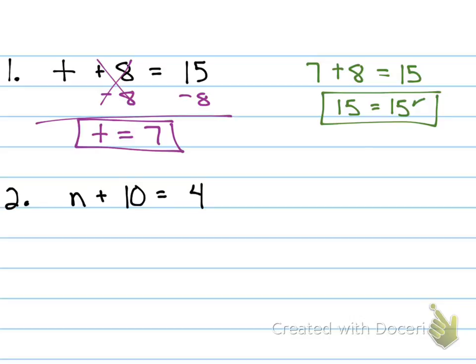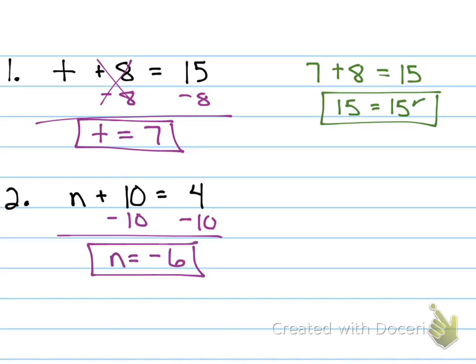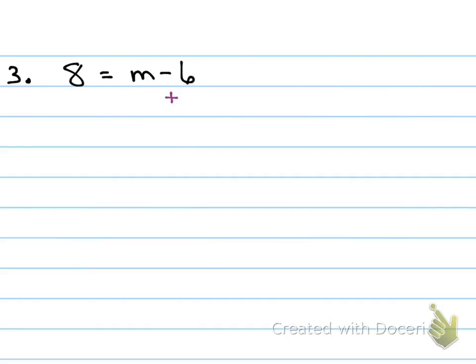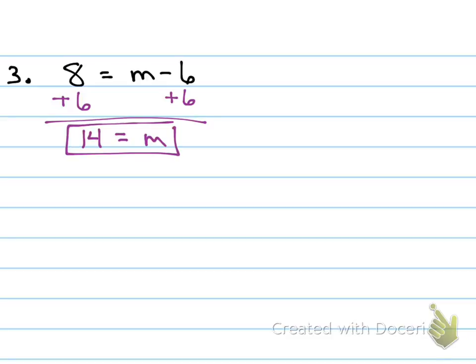Number two: subtract 10 from both sides. What's 4 minus 10? Negative 6. When I plug it back in and check, it works out — n equals negative 6. Number three is written backwards, but I still solve the side with the variable. How do I get rid of negative 6? I add 6 to both sides — 14 equals m.